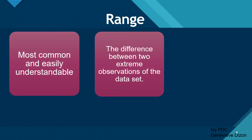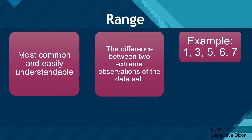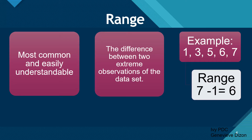Simply, this is the difference between the maximum value and the minimum value given in a data set. For example, we have 1, 3, 5, 6, and 7. To compute for the range, we just have to get the difference of the highest and the lowest. So 7 minus 1 equals 6. That means there is about 6 numbers between 7 and 1. This is the range.